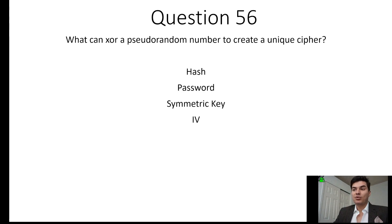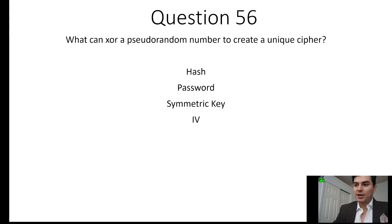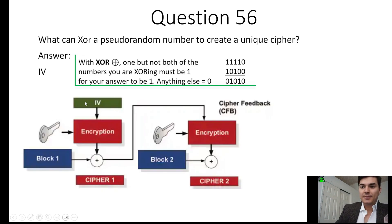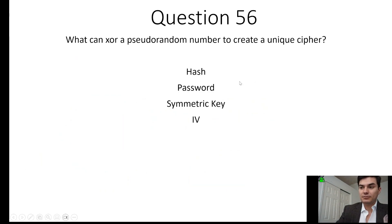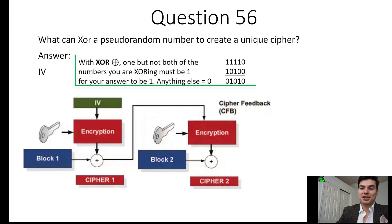Question 56: What can XOR a pseudorandom number to create a unique cipher? That would be the initialization vector. They're XORing the initialization vector with the data — the initialization vector is a pseudorandom number — creating a unique cipher. We know it's not a hash, not a password, and not a symmetric key, so the answer is the initialization vector.